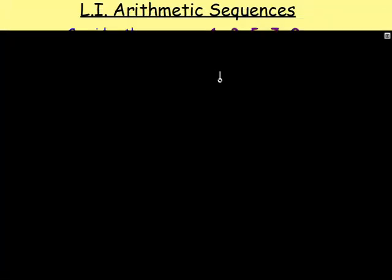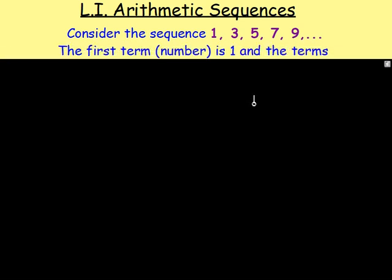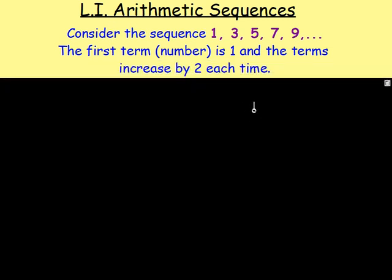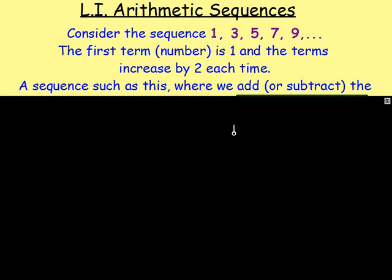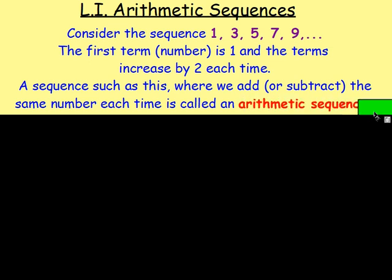What is an arithmetic sequence? Well, if you imagine the sequence 1, 3, 5, 7, 9... we can see that the first term is 1, and the terms increase by 2 each time. If the sequence is like this, where we add or subtract the same number each time, it is known as an arithmetic sequence.